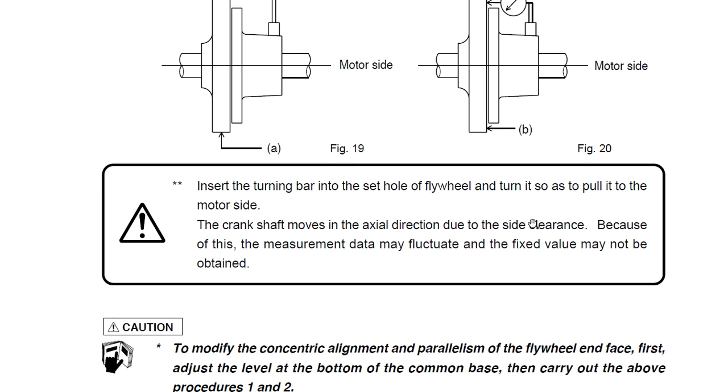Also, you must have in mind that most crankshafts have a side clearance, so the measure may fluctuate. You must also have this in mind, and you must insert the turning bar into the center hole of the flywheel and turn it to pull to the motor side mostly.